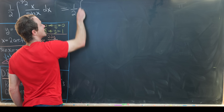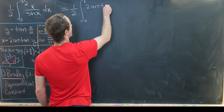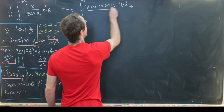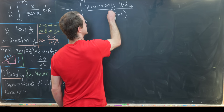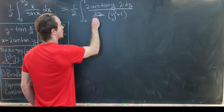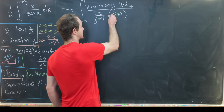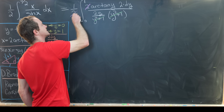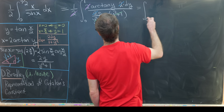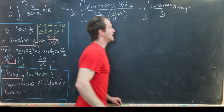Now we consolidate everything to change the integral to one involving only y. We get one-half times the integral from 0 to 1 of [2·arctan(y)] times [2·dy/(y² + 1)] divided by [2y/(y² + 1)]. The factors of (y² + 1) cancel, as do the three factors of 2, leaving us with the integral from 0 to 1 of arctan(y)/y dy. Now we just need to evaluate that.